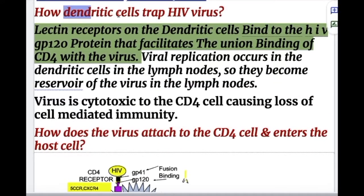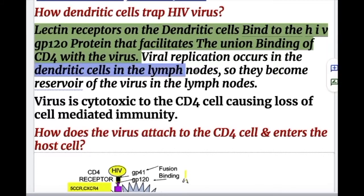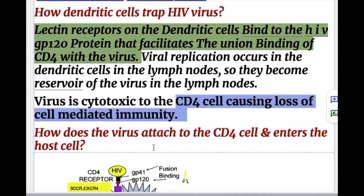C-type lectin receptors on the dendritic cells bind to the HIV GP120 protein, facilitating the binding of the CD4 cell with the virus. Viral replication occurs in the dendritic cells in the lymph node, making them reservoirs of the virus. The virus is cytotoxic to the CD4 cell, causing loss of cell-mediated immunity.